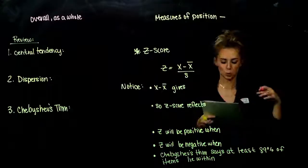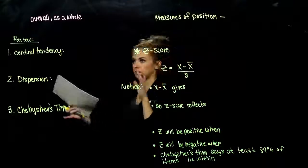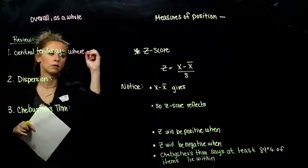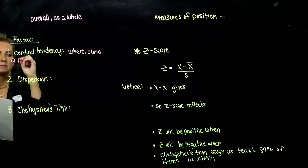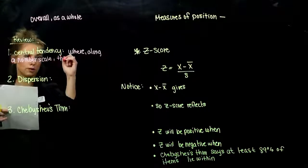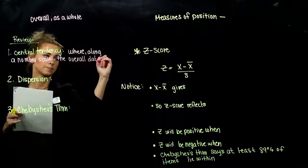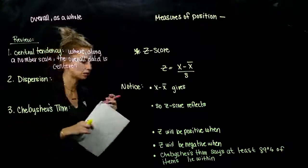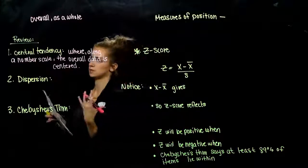The central tendency tells us where along a number scale the overall data is centered. We've been using the mean a lot, but we still have the median and the mode — can't forget about those. Those are our measures of central tendency.